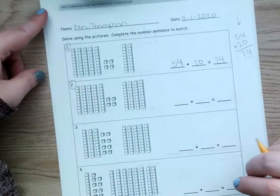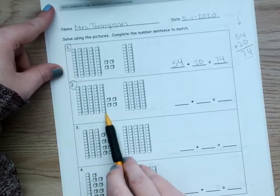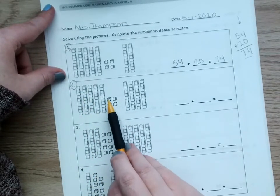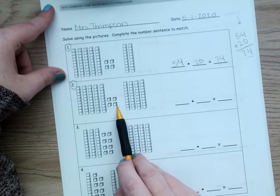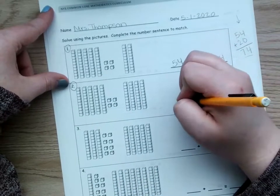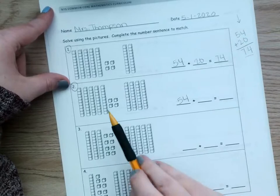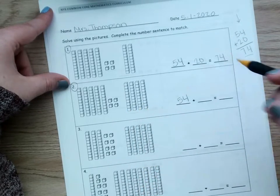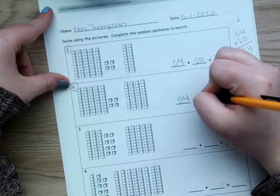Number 2, we're going to do the same thing. Count up the first section. 10, 20, 30, 40, 50, 51, 52, 53, 54. Again, 54. And find the second section. 10, 20, 30, 40 this time. Okay?